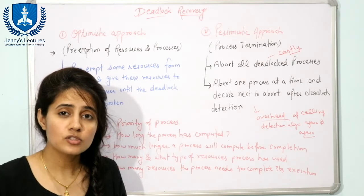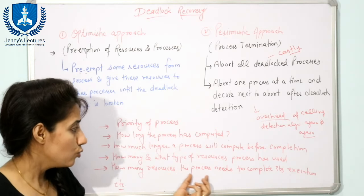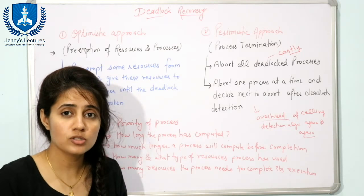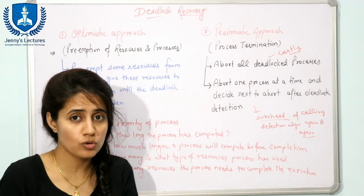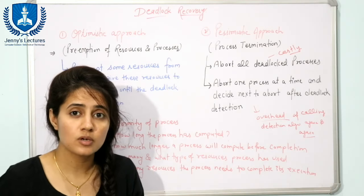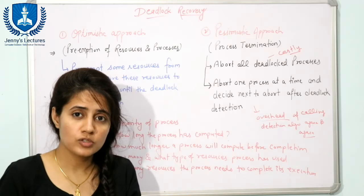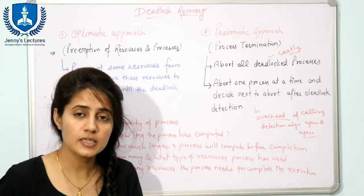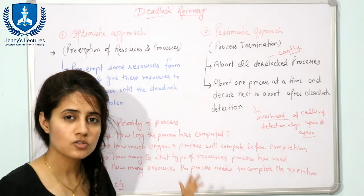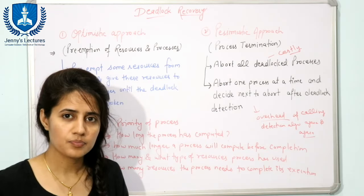Another factor is whether the process is an interactive process or a batch process. Also consider how many resources a process still needs to complete its execution. For example, if one process needs only one more resource but another needs ten more, it's better to abort the one that needs ten more resources. These are the key factors for selecting a process to kill.